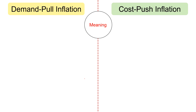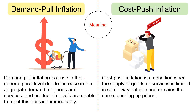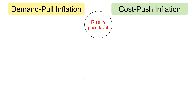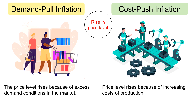Moving on to the differences between demand-pull and cost-push inflation. Demand-pull inflation is a rise in the general price level due to an increase in aggregate demand for goods and services, where production levels are unable to meet this demand immediately. On the other hand, cost-push inflation is a condition when the supply of goods or services is limited in some way but demand remains the same, pushing up prices. In demand-pull inflation, the price level rises because of excess demand conditions in the market, whereas in cost-push inflation, the rise in price level is due to the increased cost of production.